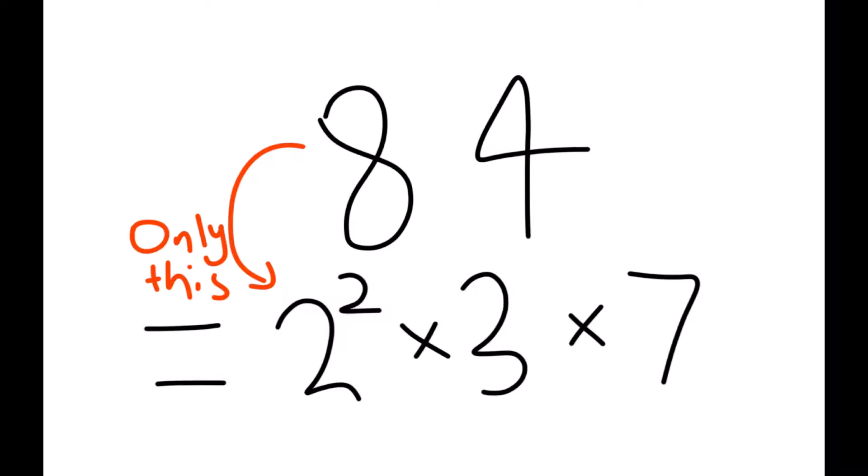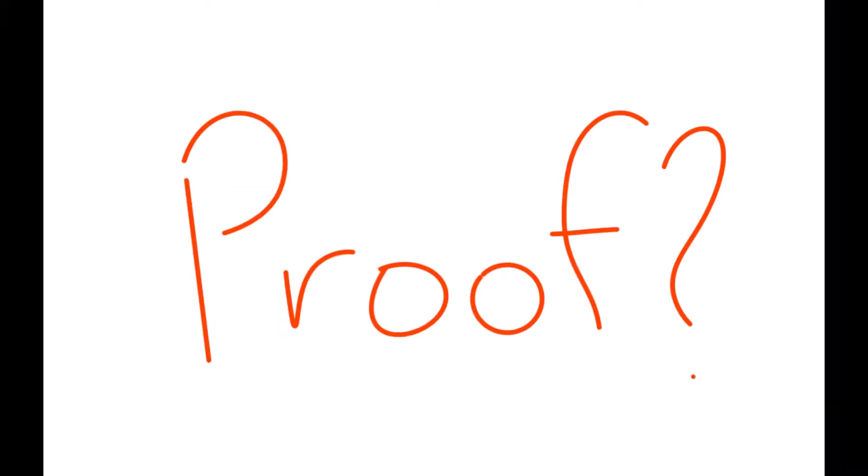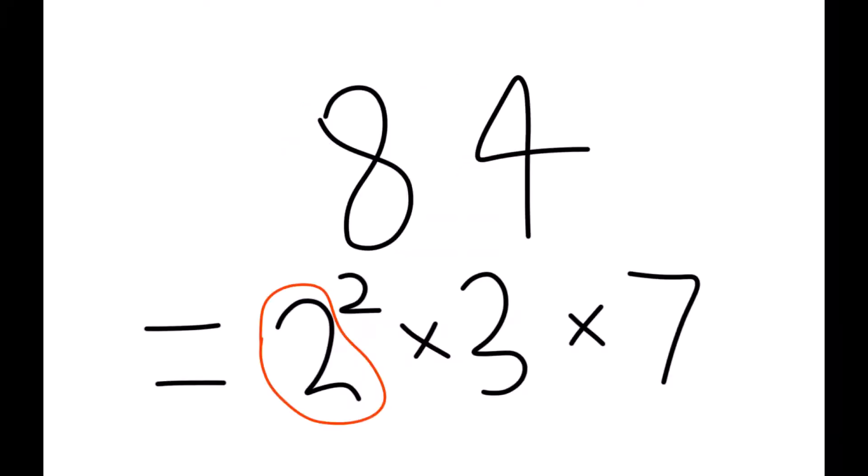So prime factorization is basically representing a number as a product of primes. Every number has only one possible unique prime factorization product. I don't know about a proof for that, but it's probably out there, so you can go search for that.